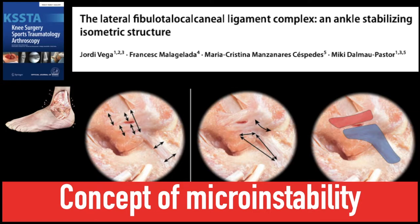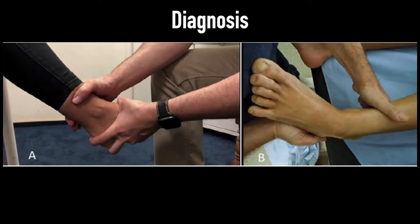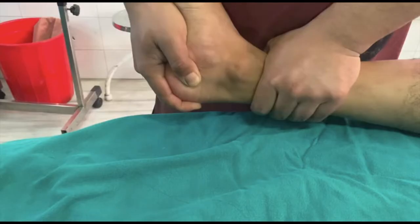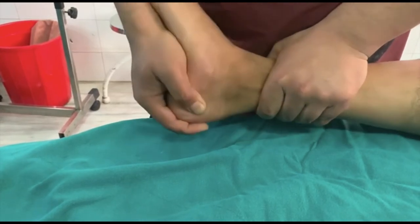The Jordi Vega paper is very important and an interesting read; I advise everyone to go and read it and understand the concept of micro instability. For diagnosis, we should first take a good clinical history: number of ankle sprains, the pain, its location, the swelling and its location. Then clinical examination — the anterior drawer test and medial-lateral varus, inversion and eversion tests — are very important. Plain x-rays, MRI, and all sorts of investigations are also important. This is how we do the anterior drawer test: we keep the ankle in neutral position and translate the whole ankle-foot complex on a stable leg.